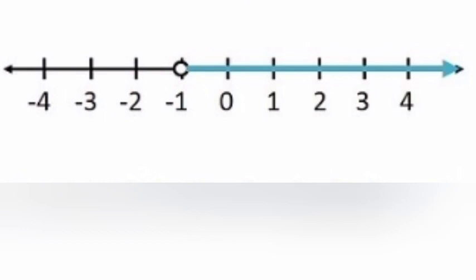Since x is negative, we multiply both sides by -1 and change the sign. -1 × (-x) > -1 × 1. Therefore x > -1. The graphical representation: -1 is not included in the shaded graph.